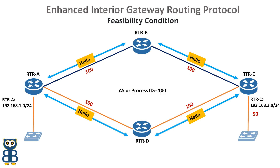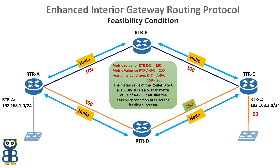Let's verify what happens when the EIGRP feasibility condition is satisfied. The metric value of Router D to Router C is 150. In order to satisfy the feasibility condition for Router A, the metric value of Router D to Router C should be smaller than that of Router A to B to C. Since metric value 150 is less than the total metric value of Router A to B to C, Router D can be used as a backup router by Router A to reach Router C and the destination networks behind Router C. Router D is installed in the EIGRP topology table of Router A.